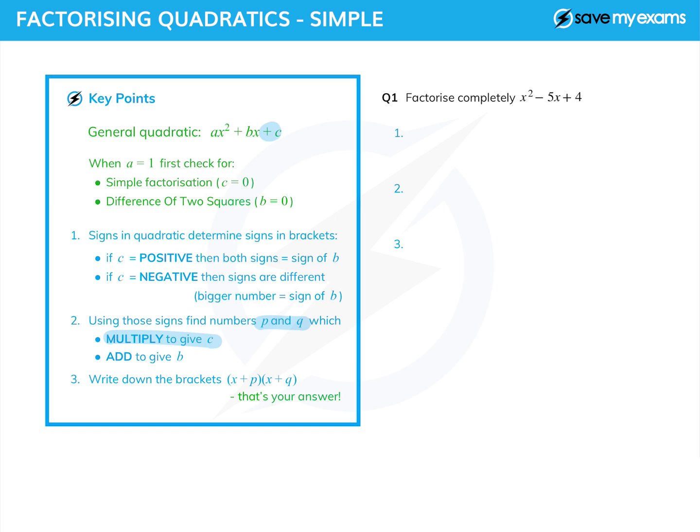Those two numbers must multiply to give c and add to give b. Once we've found those two numbers, we simply write down the brackets: (x + p)(x + q), and that is our answer. Let's have a look at a couple of questions.